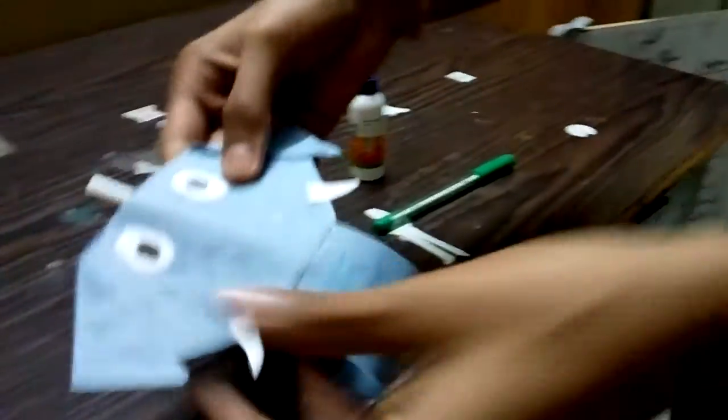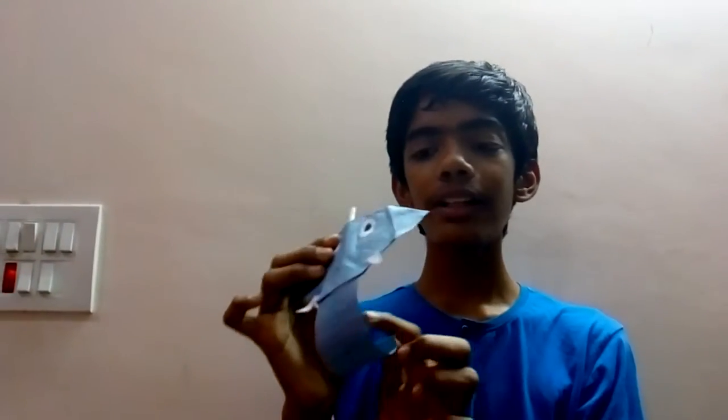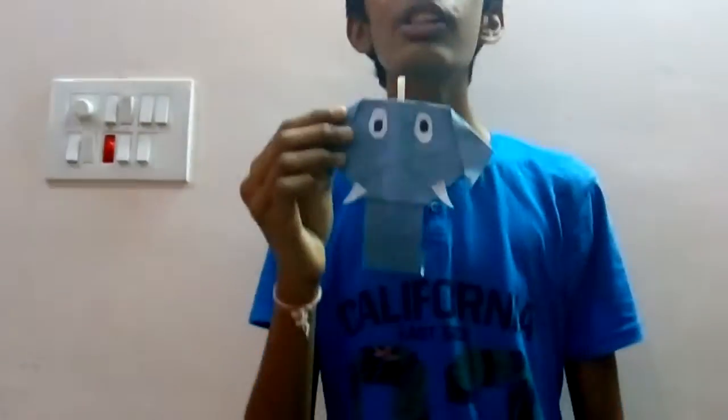Now start. The blower elephant craft is ready. If you blow the air from the straw, the trunk moves up and down. It's very nice for kids to play with it.